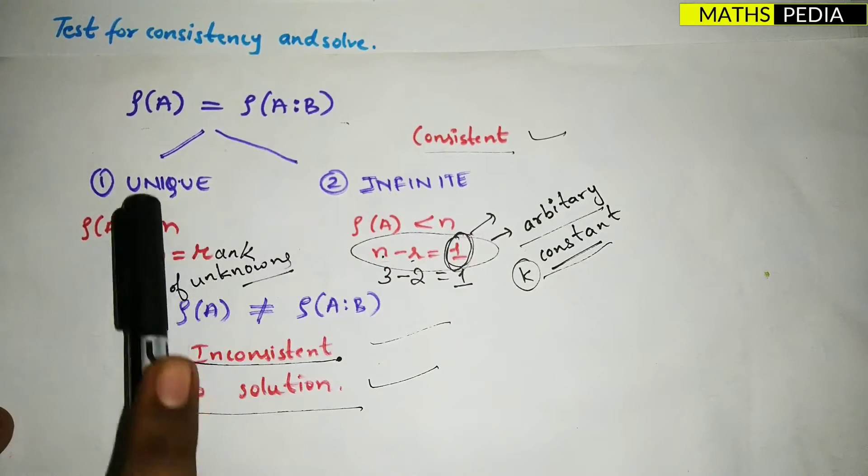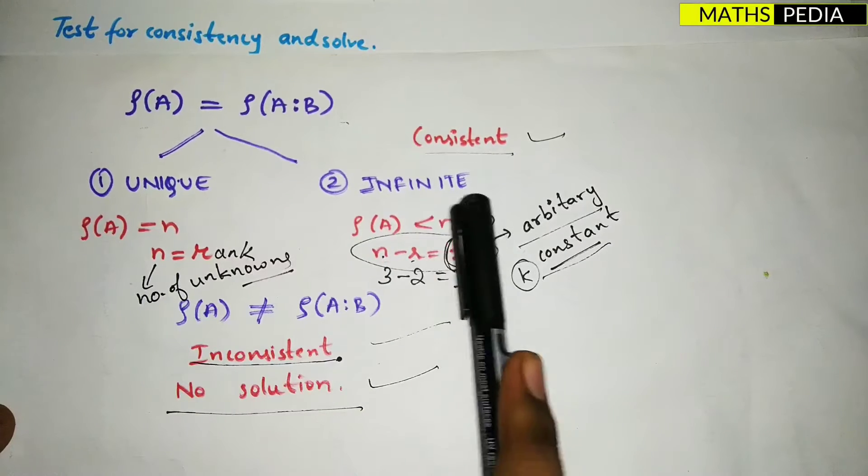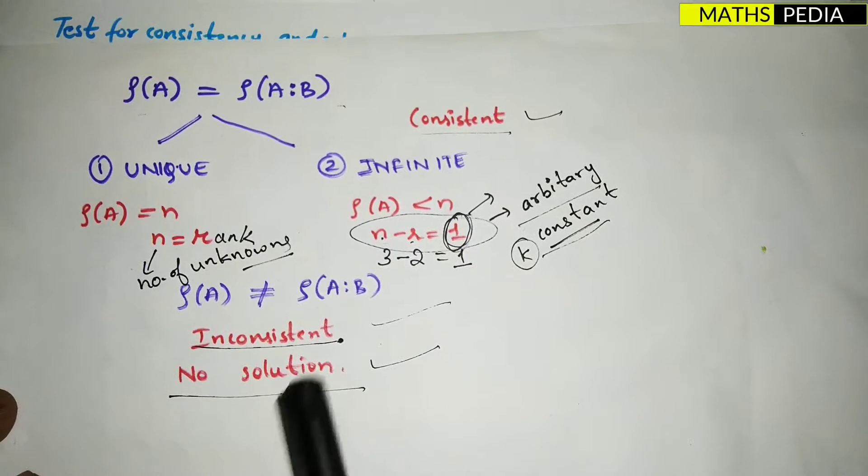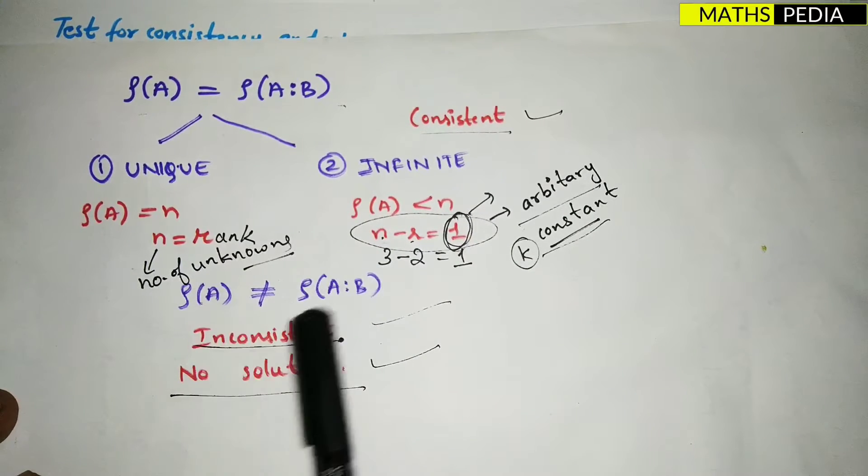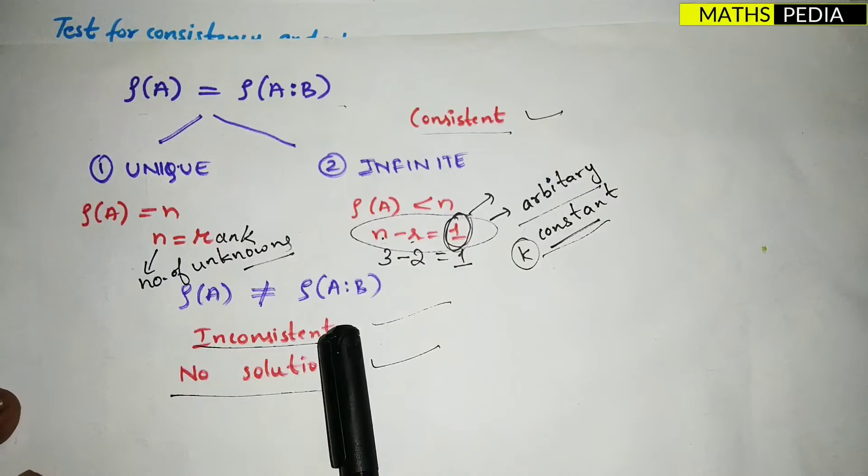If it is less than the number of unknowns, we can say it has infinitely many solutions. And one more thing: if rank of A is not equal to rank of augmented matrix [A|B], then we can say it's inconsistent and it has no solutions. So let's see this problem.